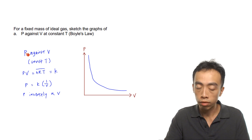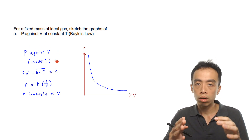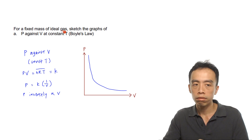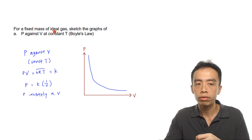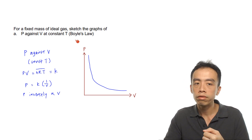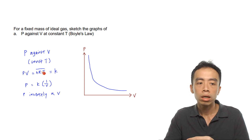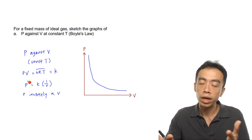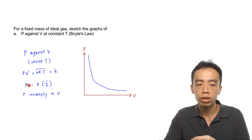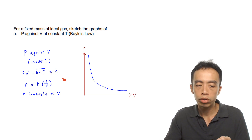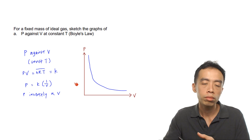For part A, pressure against volume at constant temperature: starting with PV equals nRT, since the mass is fixed, n is constant; R is constant; T is constant — so nRT is a constant term. Therefore PV equals a constant, and rearranging, P equals k times 1 over V. This shows pressure is inversely related to volume, giving an inverse (hyperbolic) graph.